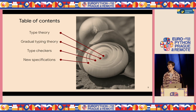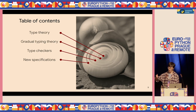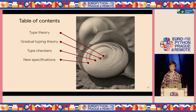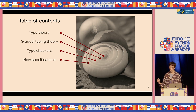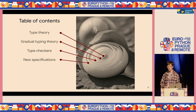Table of contents today: I'll talk about type theory, gradual typing theory, type checkers, and new specifications — going through all the things to demonstrate Python types.